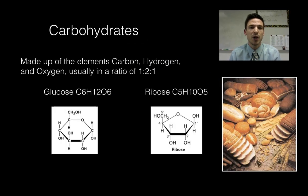So the first one we're going to talk about here are carbohydrates. Carbohydrates are things like your breads, your pastas, your wheats, potatoes, pretty much any plant product is going to be a good source of carbohydrates. And they are composed of the elements carbon, hydrogen, and oxygen. We say usually in a ratio of one to two to one.